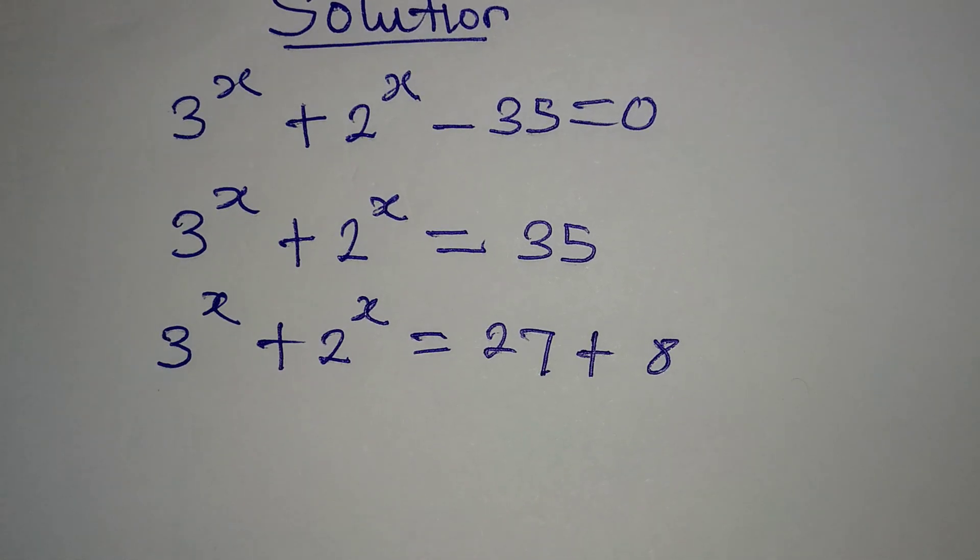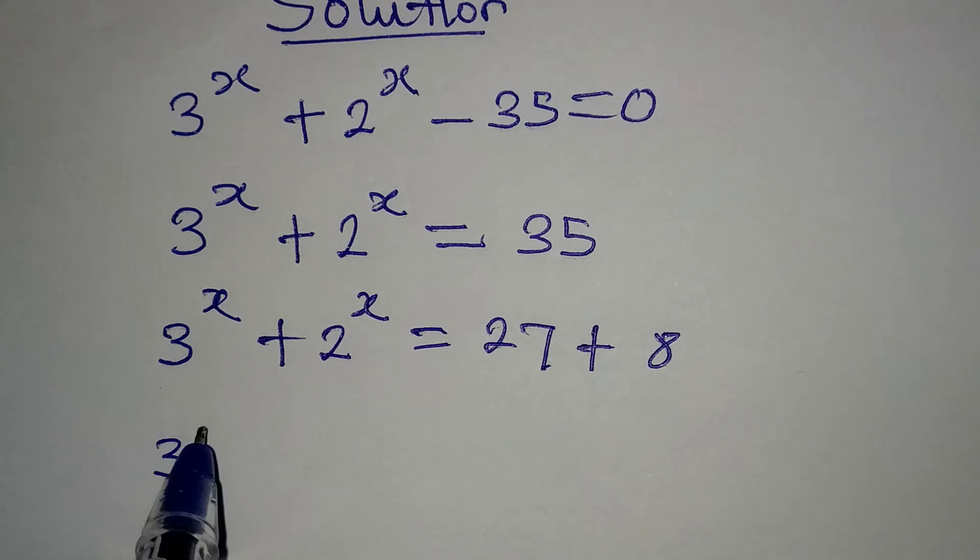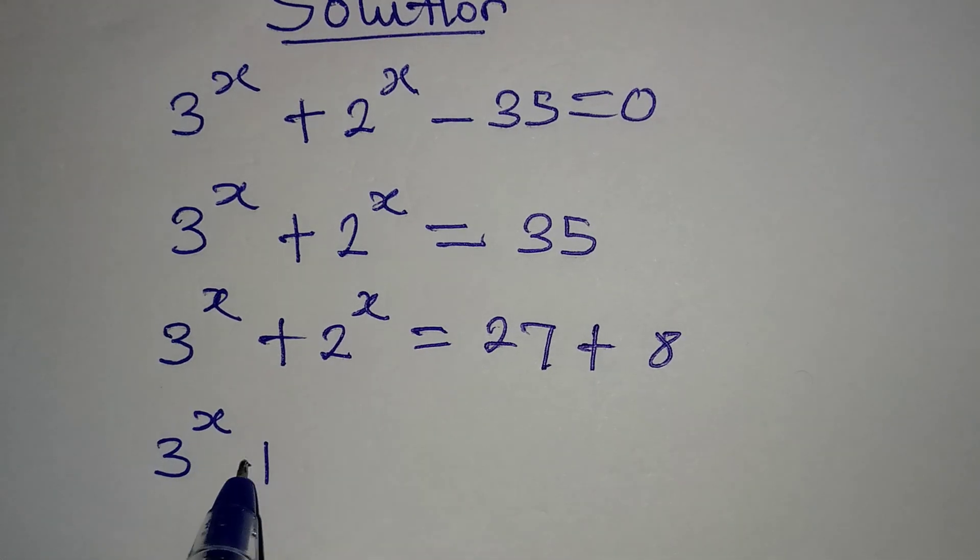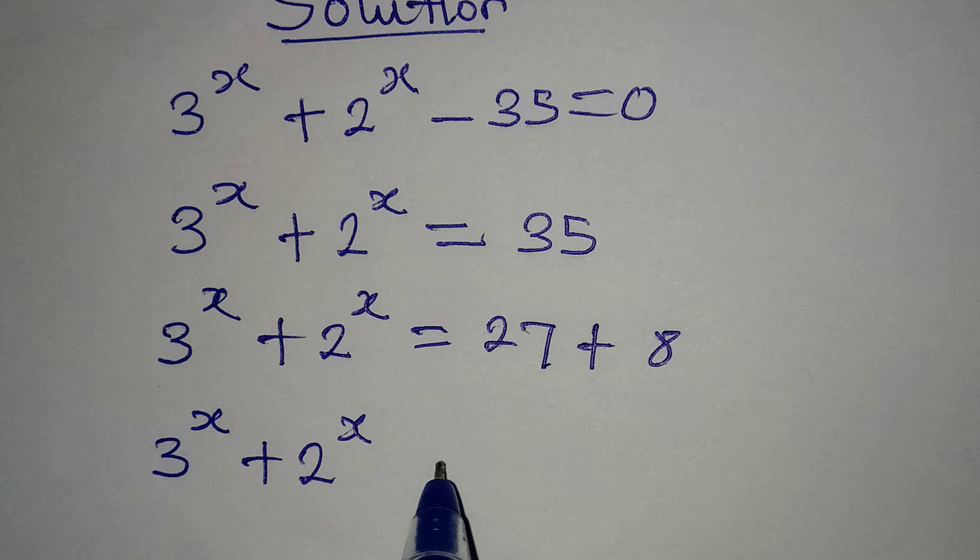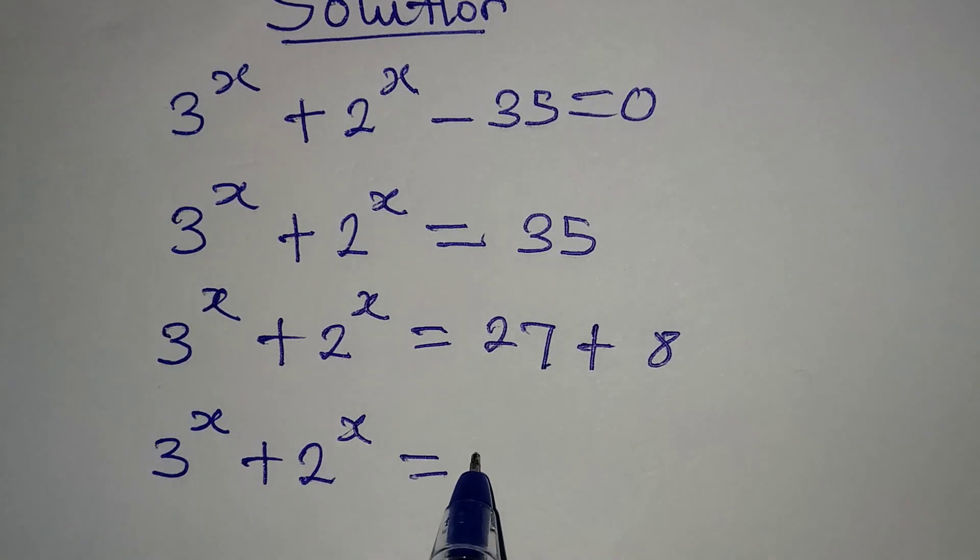So continuing, 3^x + 2^x = 27 + something. Now, 27 is the same as 3^3, right? What about 8?